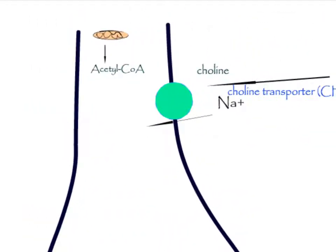Acetylcholine is synthesized in the neuronal cytoplasm from acetyl coenzyme A and choline through the catalytic action of the enzyme choline acetyltransferase.